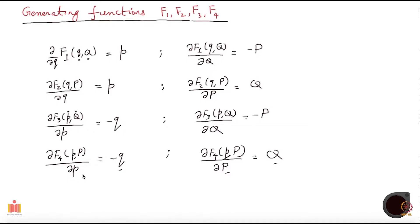In all cases, as we observed last time, the new Hamiltonian H prime will be just the old Hamiltonian written down in new variables plus delta F over delta t, where F could be F1, F2, F3, or F4. And if there is no explicit time dependence in F, then of course H prime is just H.